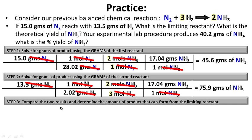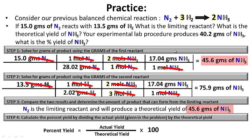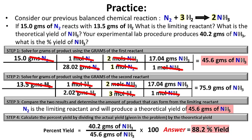Step three: compare the two results — since 45.6 is the lower number, N2 is the limiting reactant. Therefore, the theoretical yield is 45.6 grams of NH3. Step four: calculate the percent yield — actual yield of 40.2 grams divided by theoretical yield of 45.6 grams, times 100, gives an 88.2% yield.